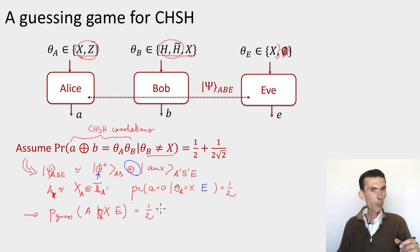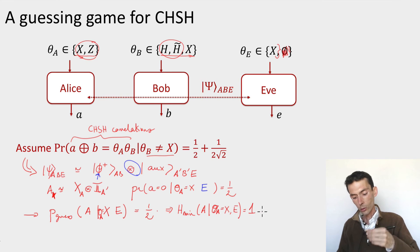And that's it. We have perfect security for our guessing game. As a consequence of this, the entropy of Alice's output, conditioned on her input being an X, and the E system is equal to one, which is the maximum we could hope for for a bit. Excellent. Perfect guessing game.